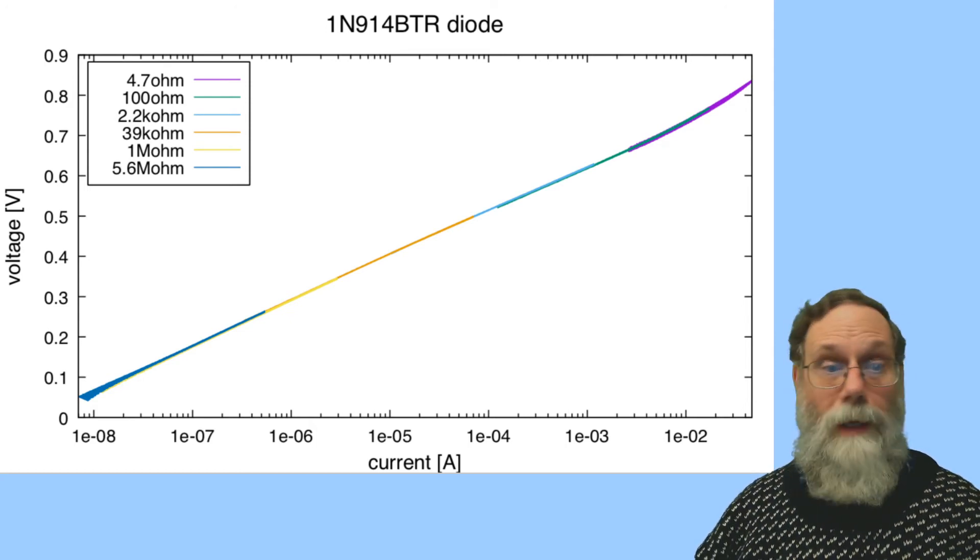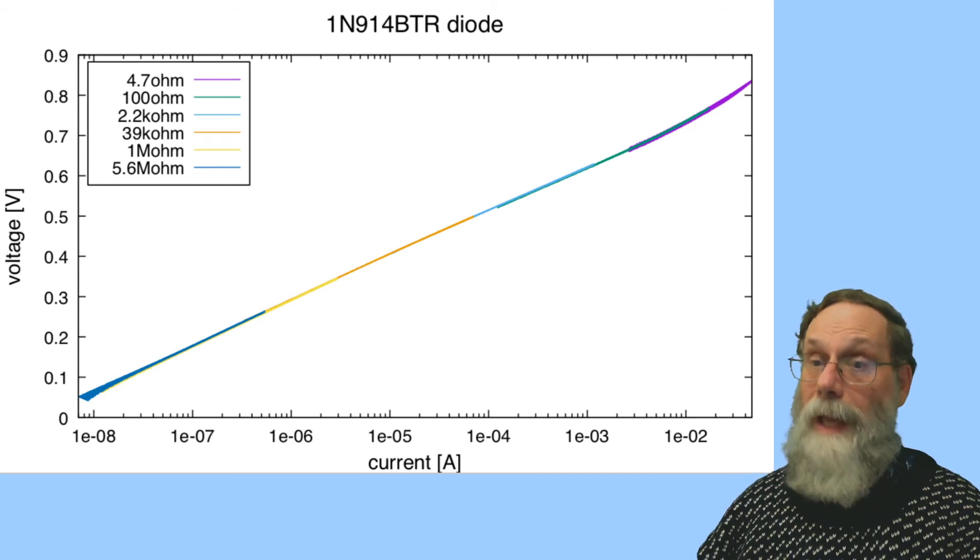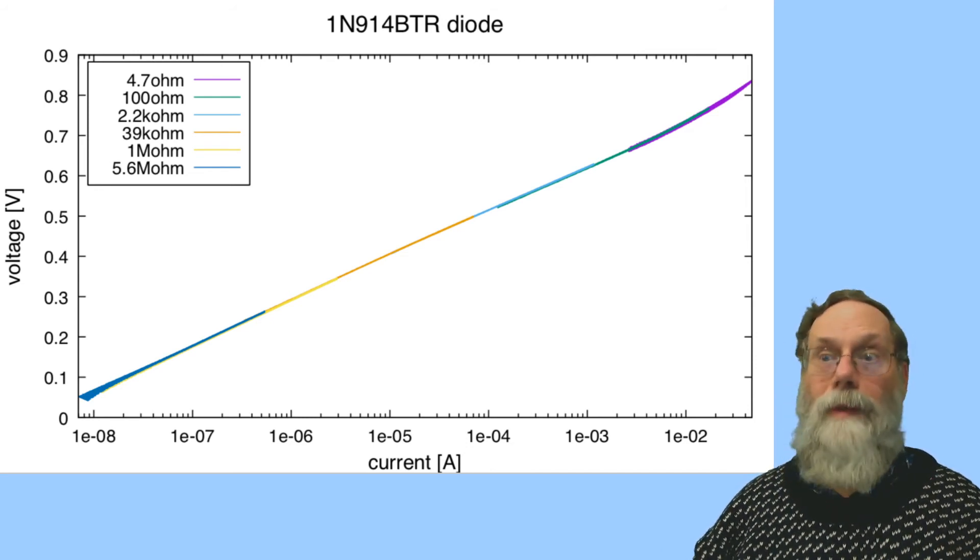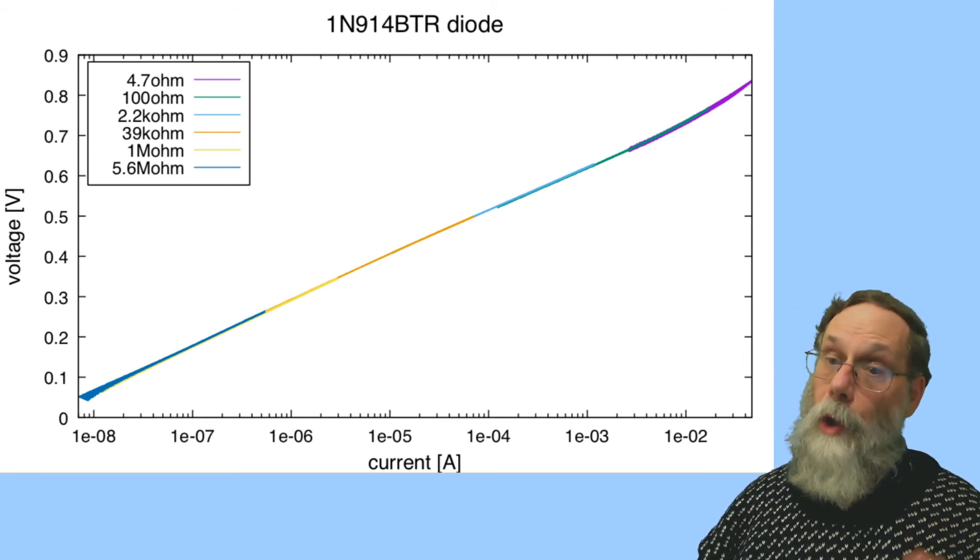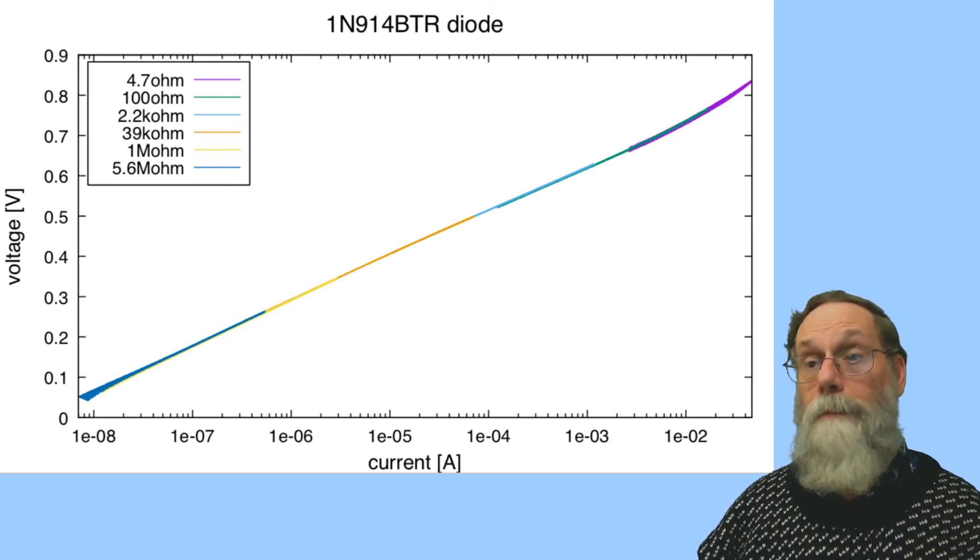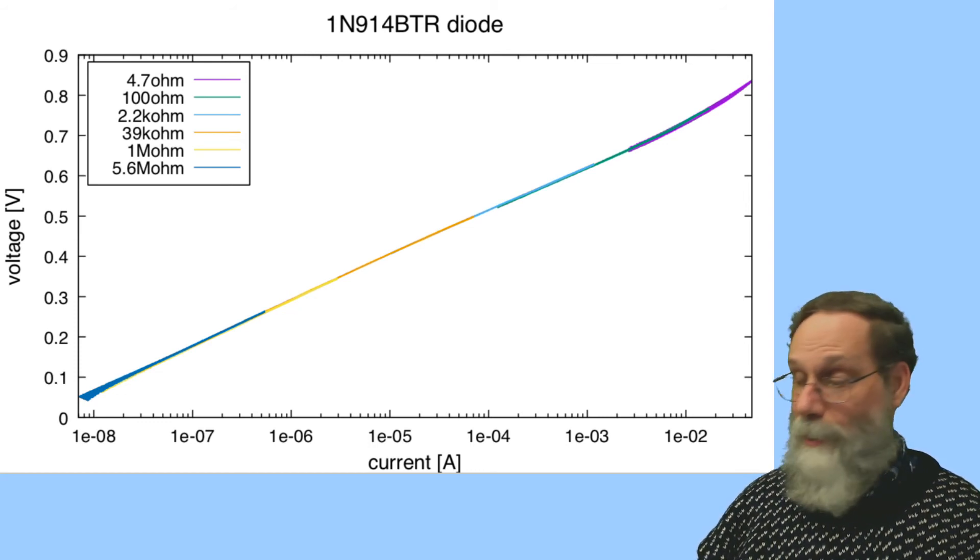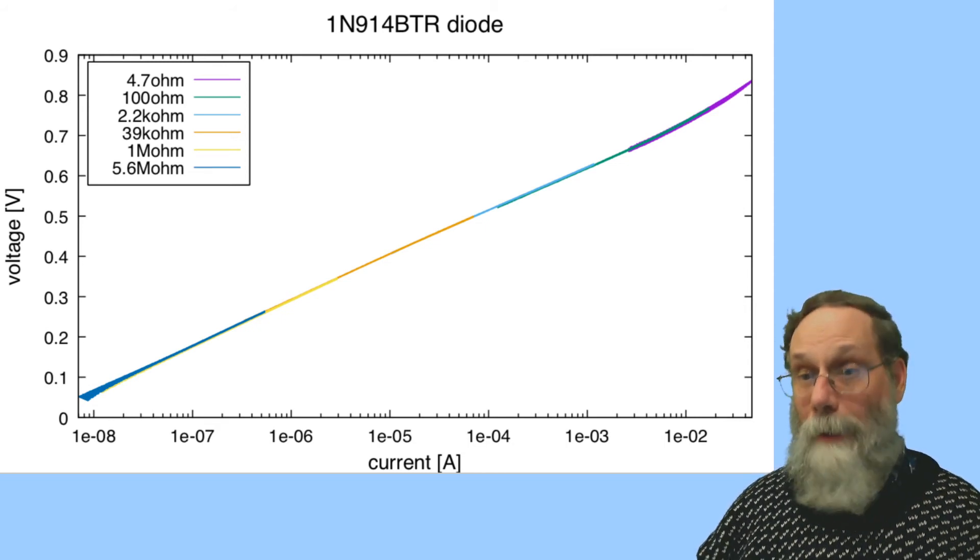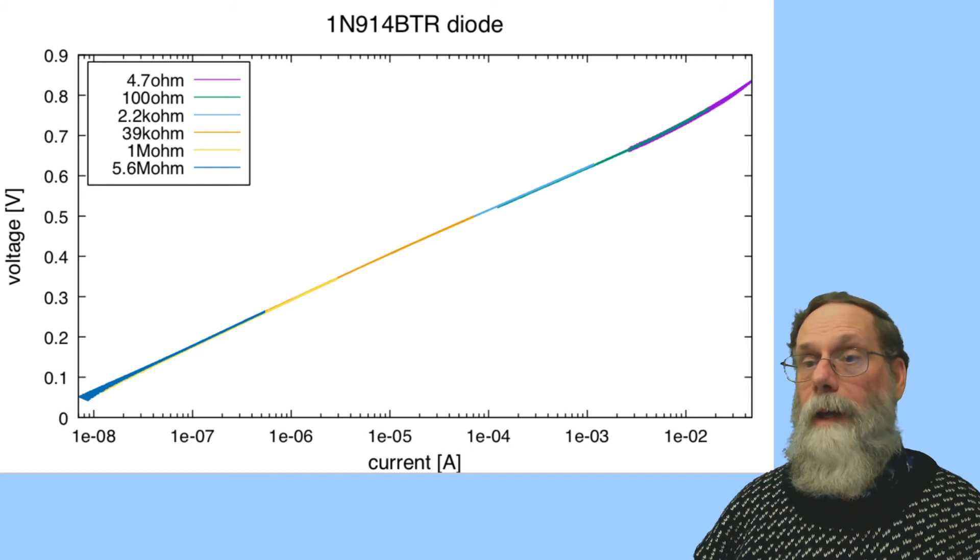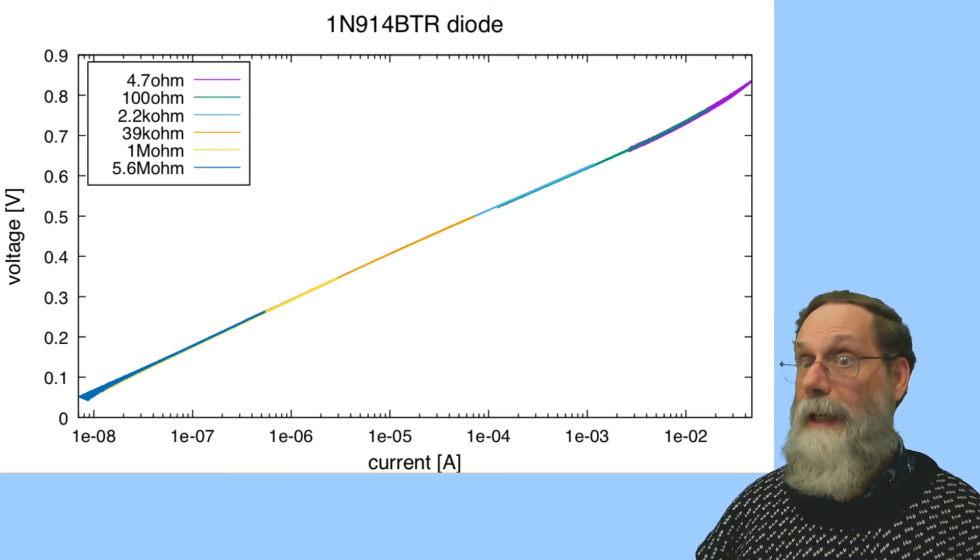So this is actually doable. You actually can make diodes behave in a way that gets some logarithmic response. And that means that the log transimpedance amplifier really does compute a pretty good logarithm. Now, the problem, of course, is that you don't have any control over what NVT is, property of the diode and of the temperature. And so your log transimpedance amplifier will have different gain at different temperatures.